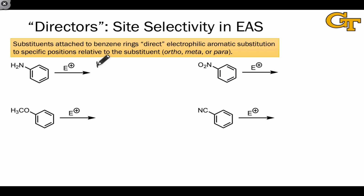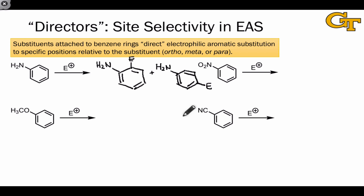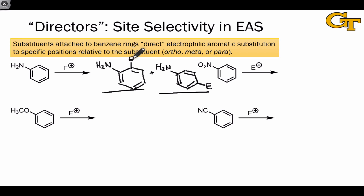When aniline reacts in electrophilic aromatic substitution reactions, we don't get a statistical mixture of the different possible products. Instead, we observe only two products: the ortho-substituted and the para-substituted, with essentially none of the meta-substituted product. And even within these two, we find more of one than the other. Often the para product is favored on steric grounds, since the ortho position is more hindered than the para position.